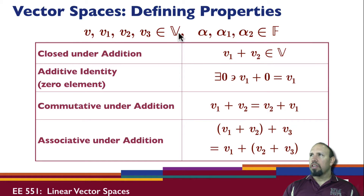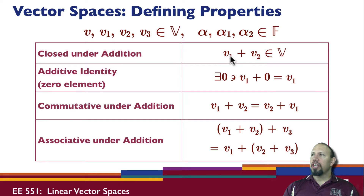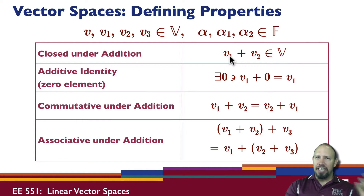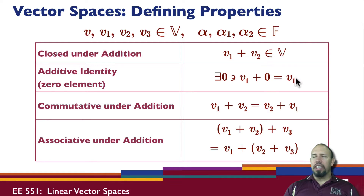The vector space is closed under addition: if I take two elements within the vector space and add them together, I get something that's still in the vector space. And there's an additive identity: the vector space has a zero element, so that when you add zero to any vector, you get the vector back. That's the additive identity property — there is a zero element within the vector space.